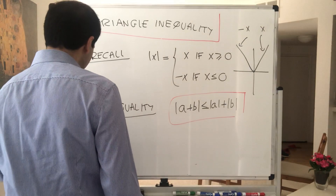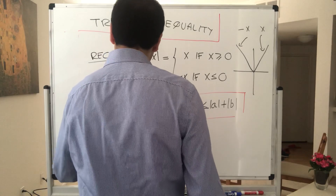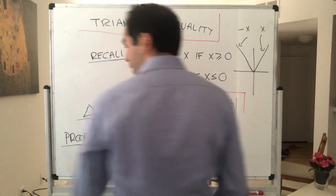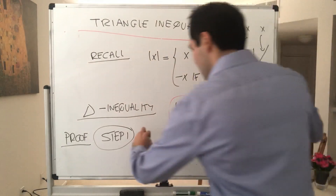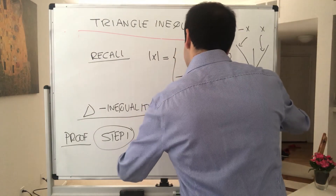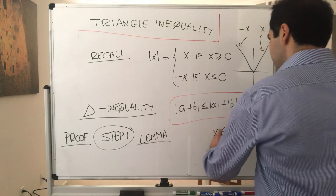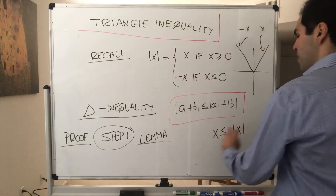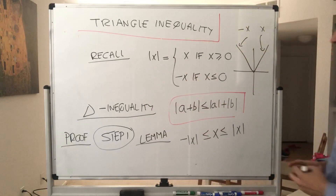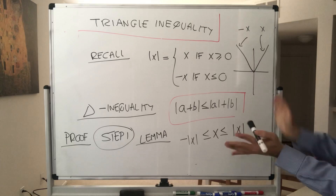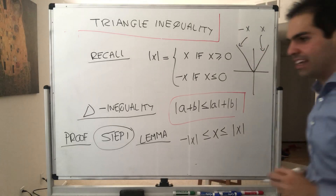First we just need a small lemma, which may or may not be obvious to you, but let me still state it. Namely, x is always less than or equal to its absolute value, and it's always greater or equal to negative its absolute value. So x is always squeezed between its magnitude and negative its magnitude.